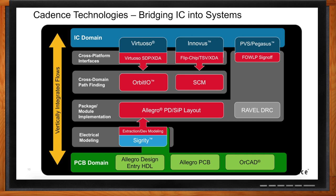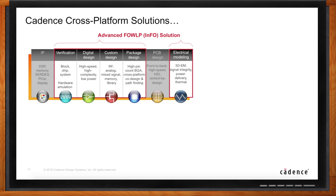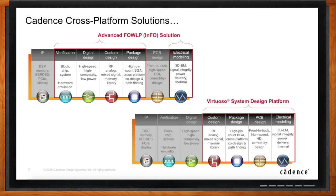Do you have any examples of this in action? We have announced several new flows. We're the first to market with our advanced fan-out wafer-level packaging flow specifically developed for TSMC's InFO technology. That vertically integrated flow ties together the chip tools with our verification platform and extends all the way to our electrical modeling technology that we call Sigrity. It's a very tightly integrated flow that allows you to start the design in one of our IC tools, move it seamlessly into the packaging tools where we also do the electrical modeling, and then feed that information back into our IC-level verification tools for sign-off.